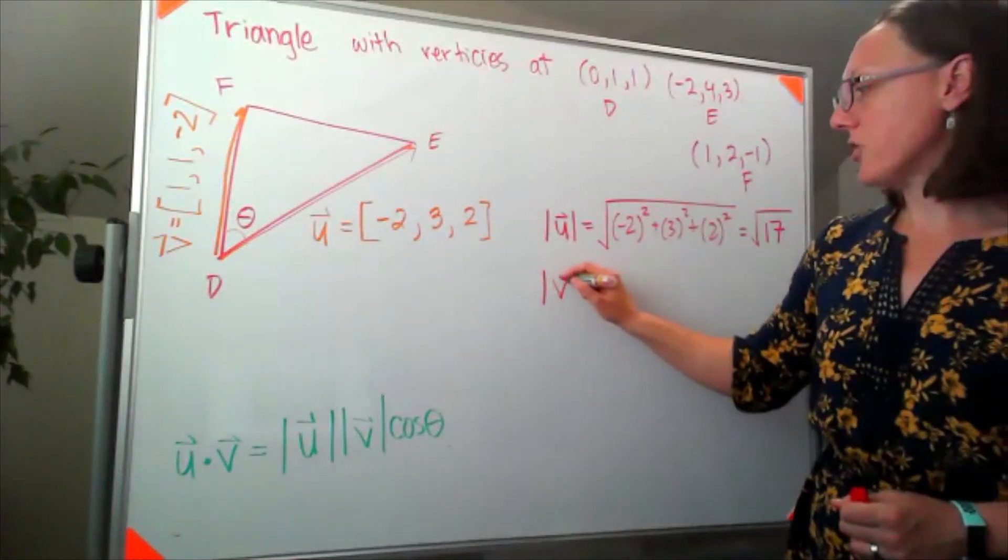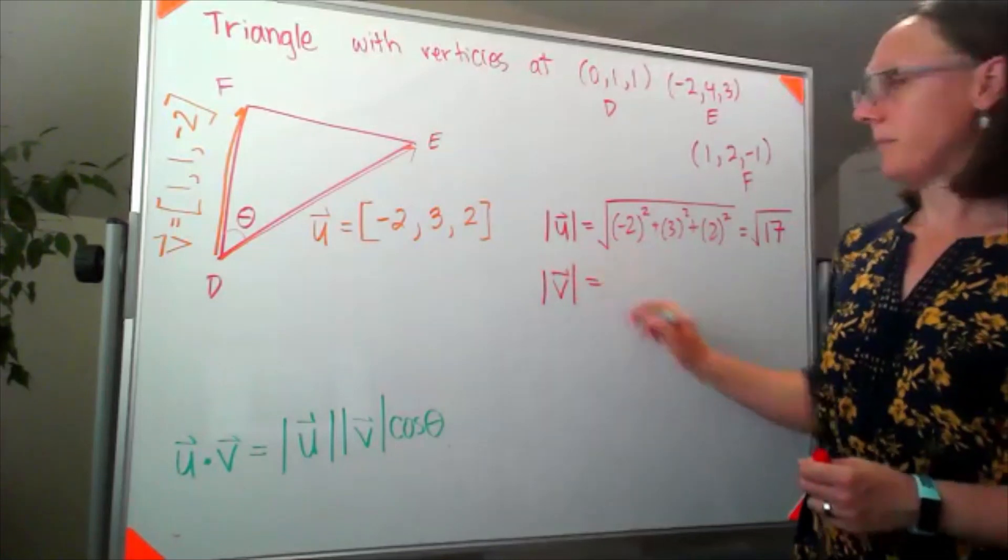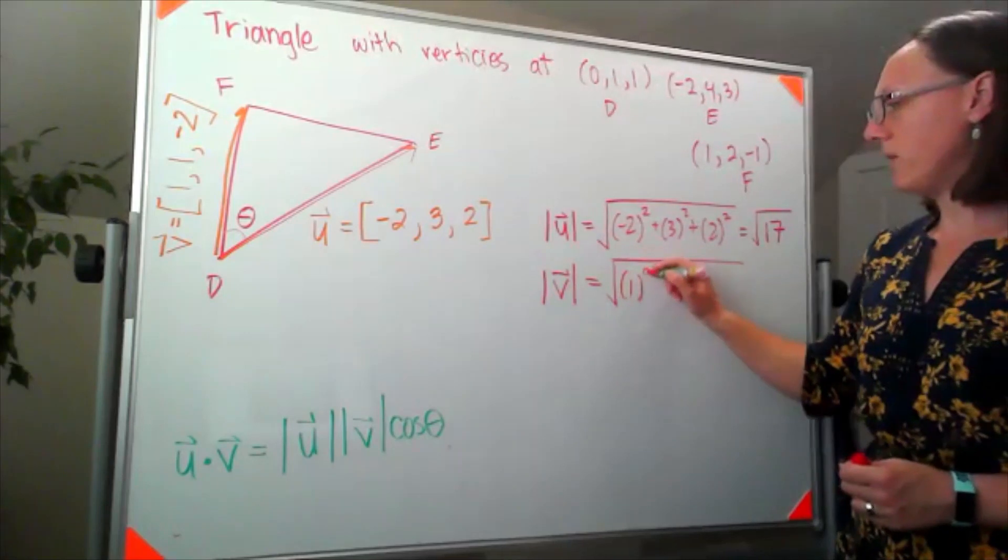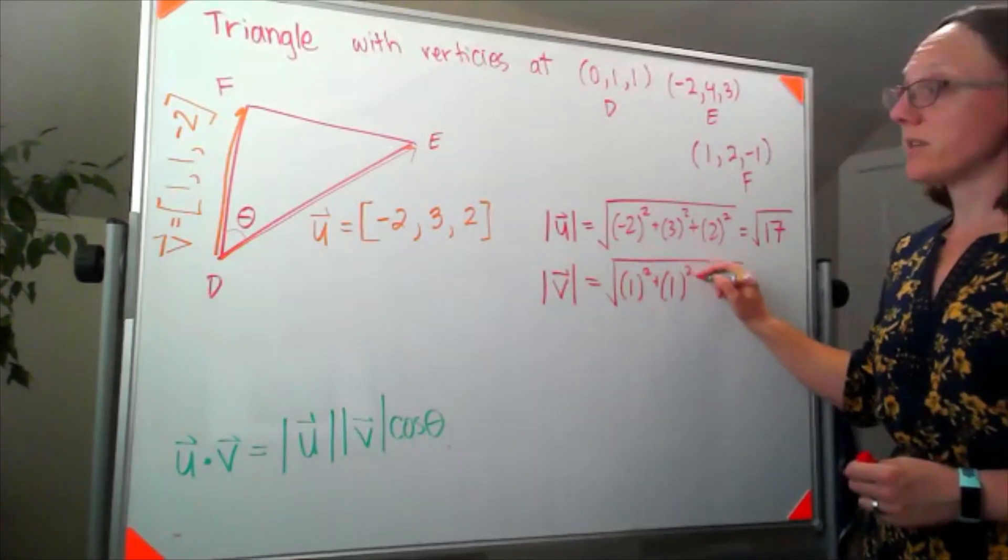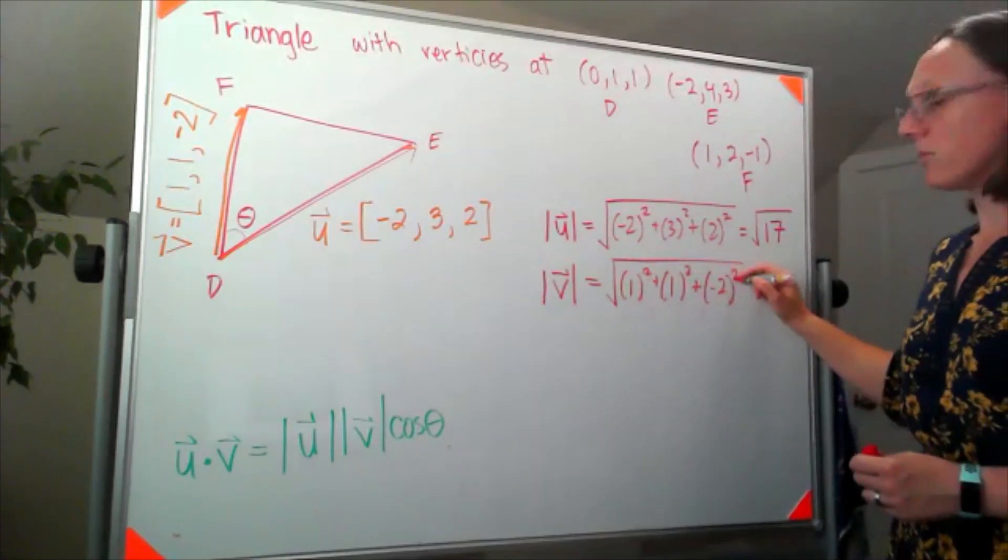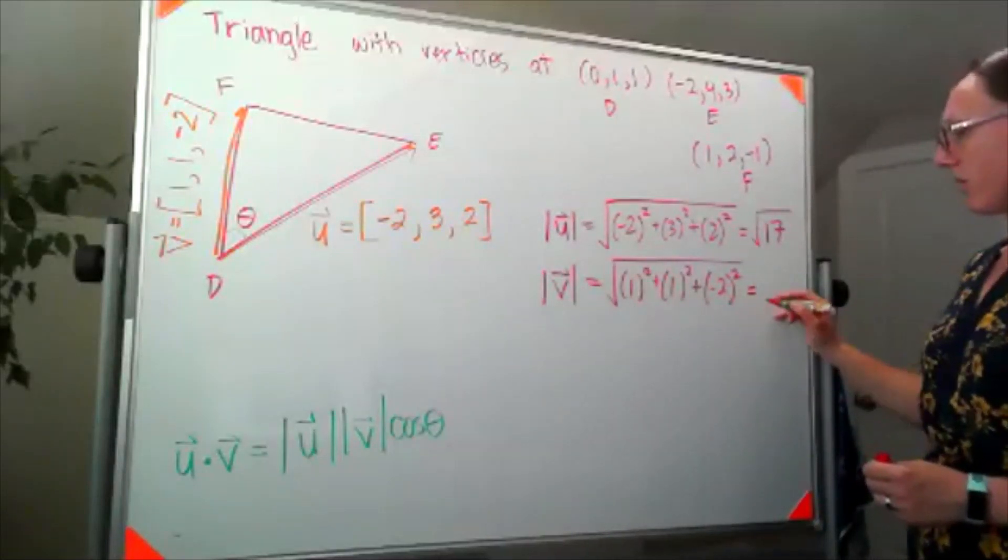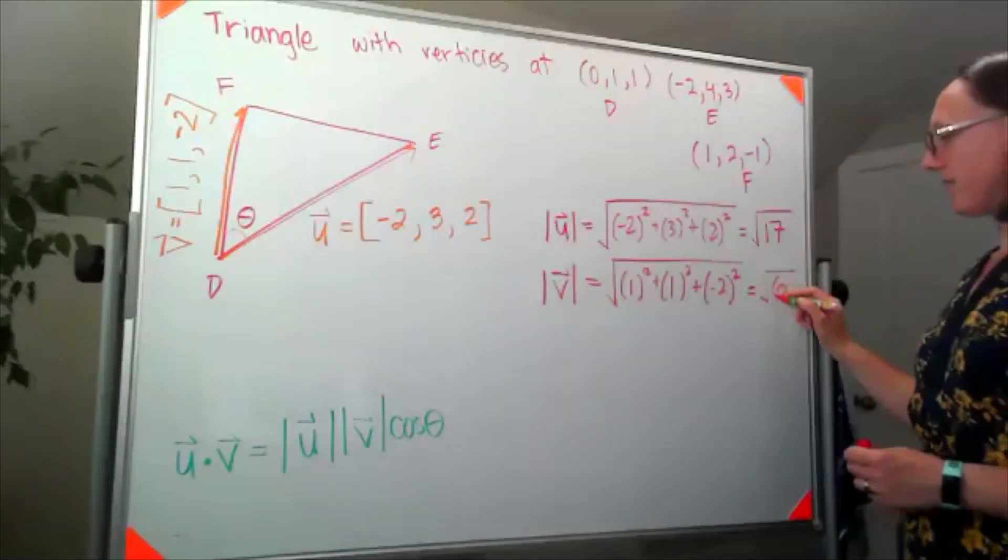And when I do the magnitude of v, that's going to look like the square root of one squared plus one squared plus negative two squared. One plus one, that's two plus four, so square root of six.